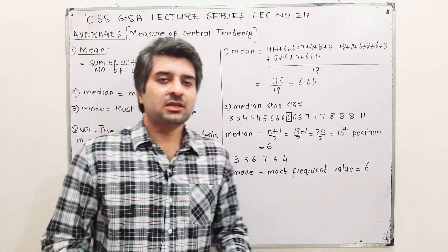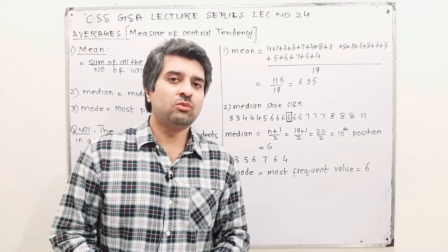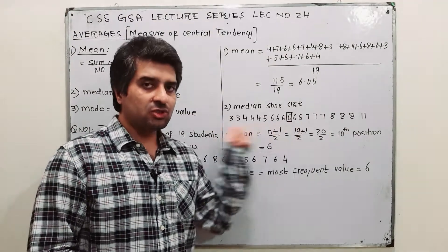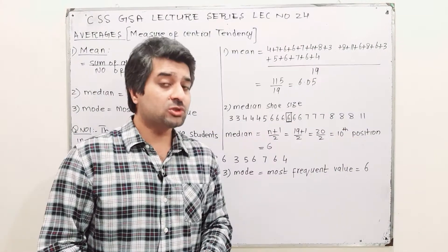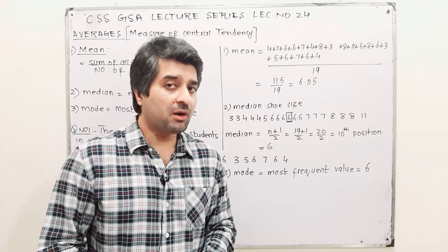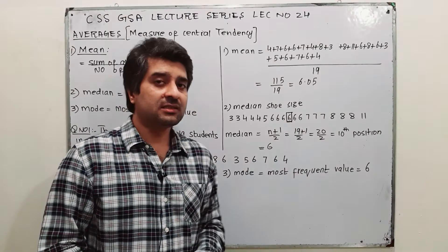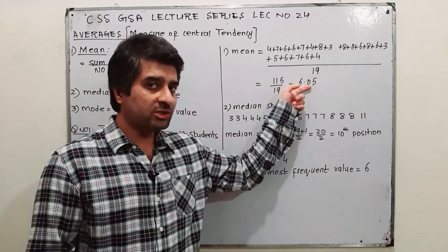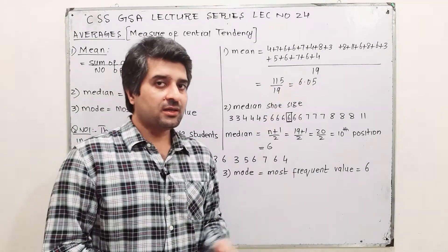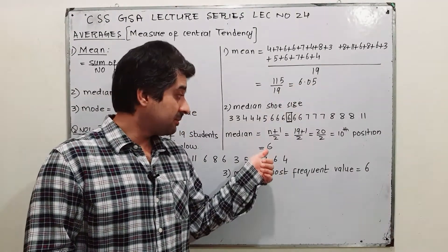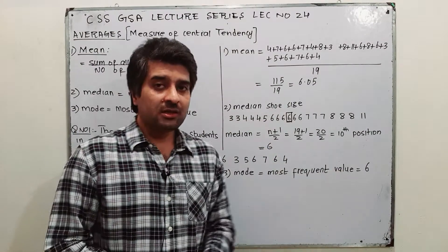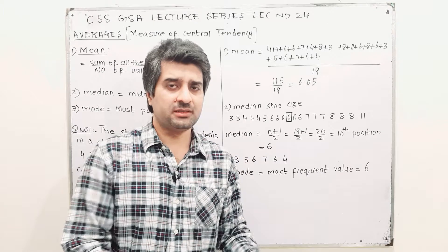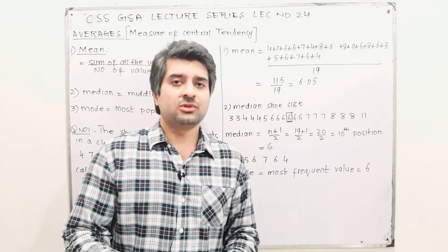Mode is the most popular, most frequently occurring value. In this shoe size data, the most frequent shoe size is 6. Comparing all three: mean is 6.05, median is 6, and mode is 6. All three averages give roughly the same value.